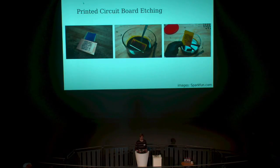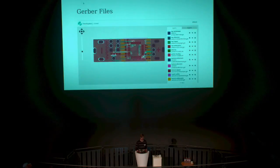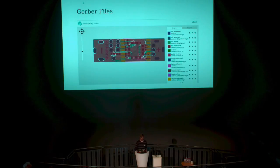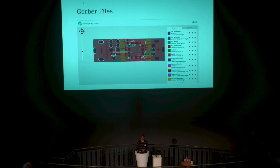That way your circuit connections are printed onto the board, and then you use an acid to remove copper everywhere where you haven't printed. It's quite a neat process. When you look at design files online, you'll find a lot more layers, and we're going to go through what all those different layers are and what they're for.